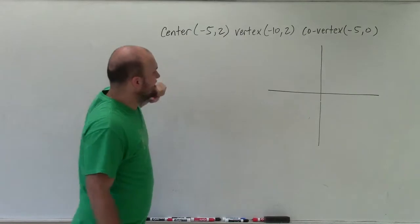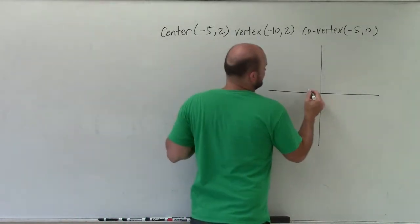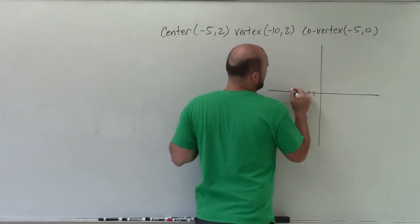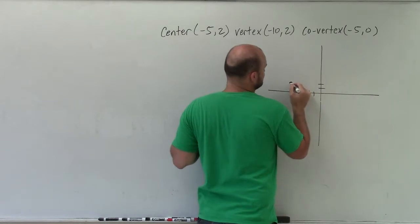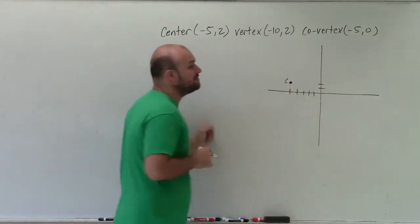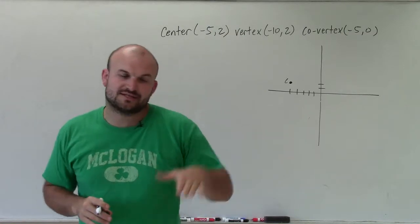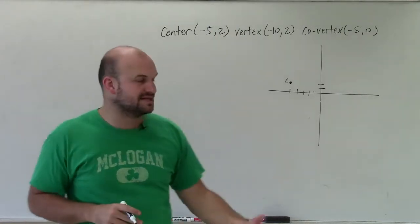So we know the center is at (-5, 2). So I'm going to go over -5, up 2, make a big dot. That's the center. Now remember, the major axis—what lies on the major axis is the vertices, the foci, and the center.